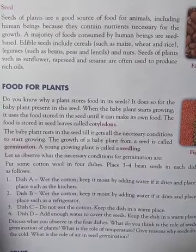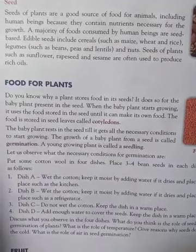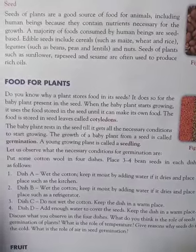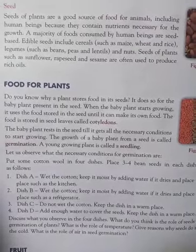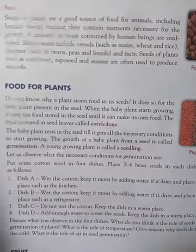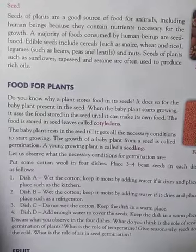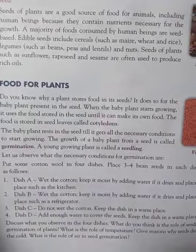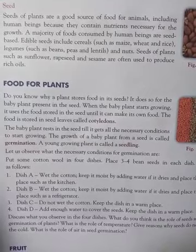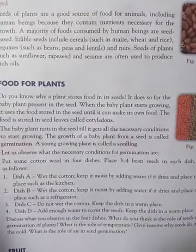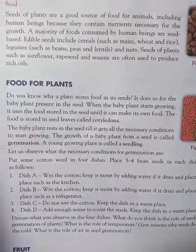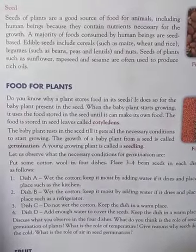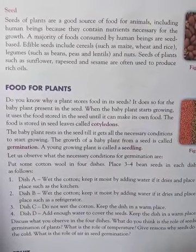When the baby plant starts growing, it uses the food stored in the seeds until it can make its own food. When the baby plant is small, it uses the food stored from the seeds. The food is stored in seed leaves called cotyledons.